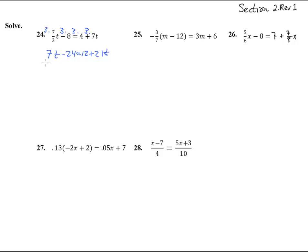Now we've got to get these two t's together, so if we subtract 7t from both sides of the equals sign, we get negative 24 equals 12 plus 14t. Now we subtract 12 over here, and we get negative 36 equals 14t. Divide both sides by 14, t equals negative 36 over 14, that equals negative 18 over 7.